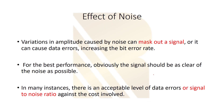Now for the effect of noise: we want to see why we always try to avoid and minimize noise. Variations in amplitude caused by noise can mask out a signal or cause data errors, increasing the bit error rate. For best performance, the signal should be as clear of noise as possible, so we must minimize it. In many cases there is an acceptable level defined by the signal-to-noise ratio balanced against the cost involved.